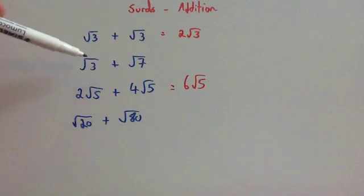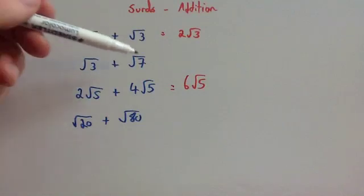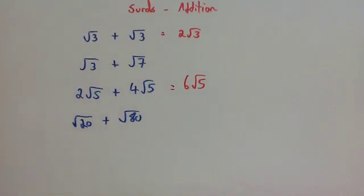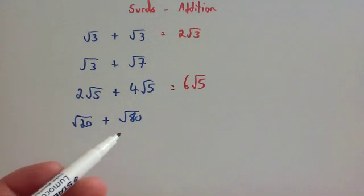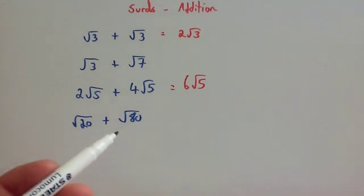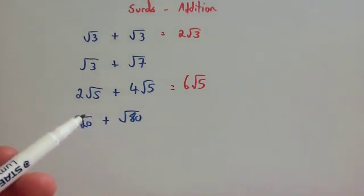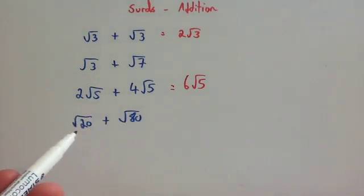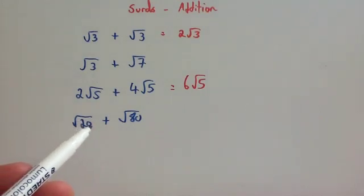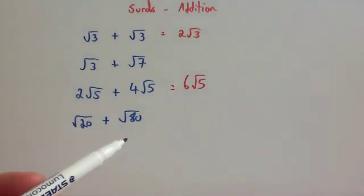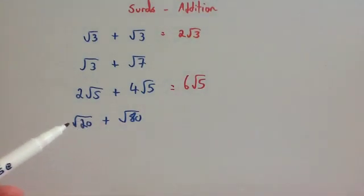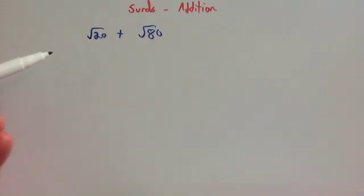However, you can't add them whenever they have different numbers under the surds. This one here — root 20 plus root 80 — you can't add these directly; you've got to simplify them first. Watch the other video on surds to see how to simplify them. So we've got root 20 plus root 80 as our example.